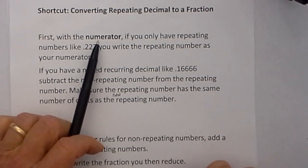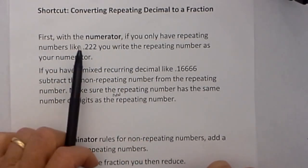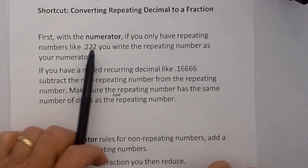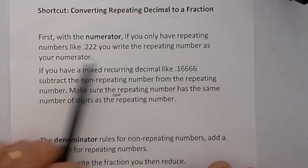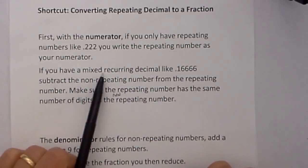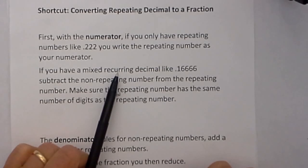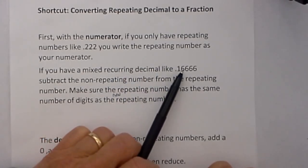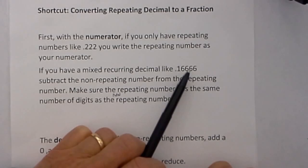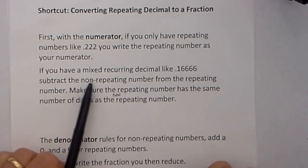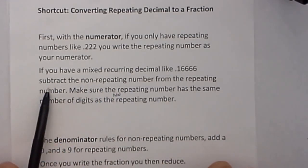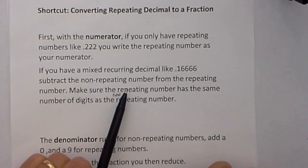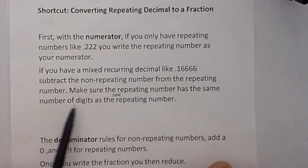First the rules. With the numerator if you only have repeating numbers like .222 you write the repeating number as your numerator. If you have a mixed recurring decimal like .1666, notice that the one does not repeat but the 666 does. You subtract the non-repeating number from the repeating number and make sure the repeating number has the same number of digits as the non-repeating.